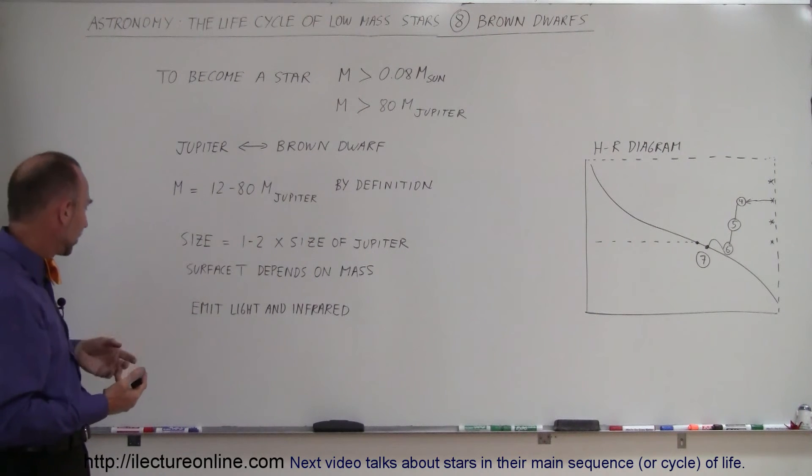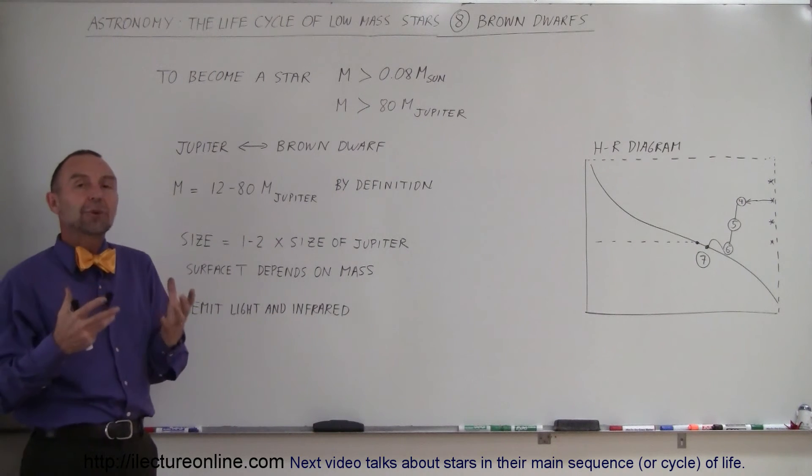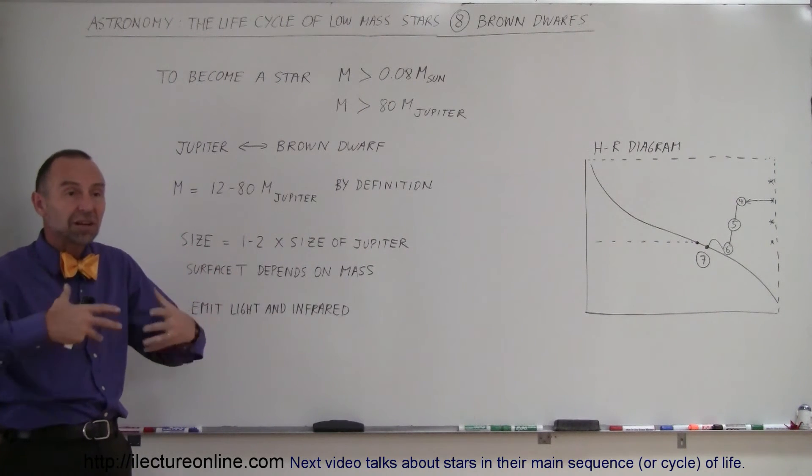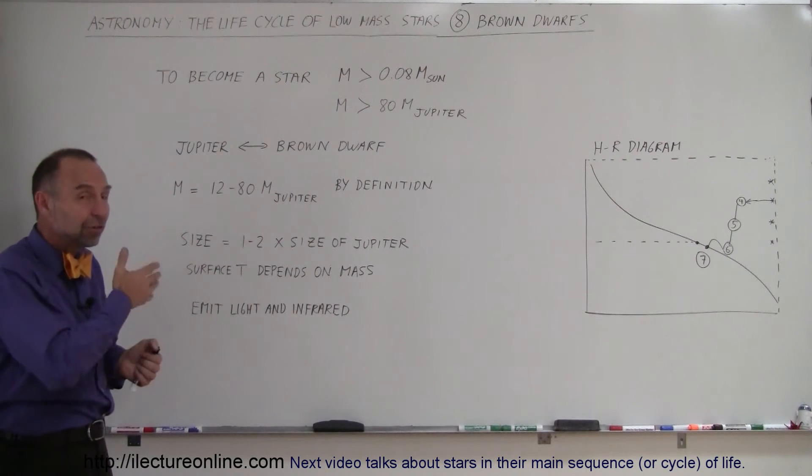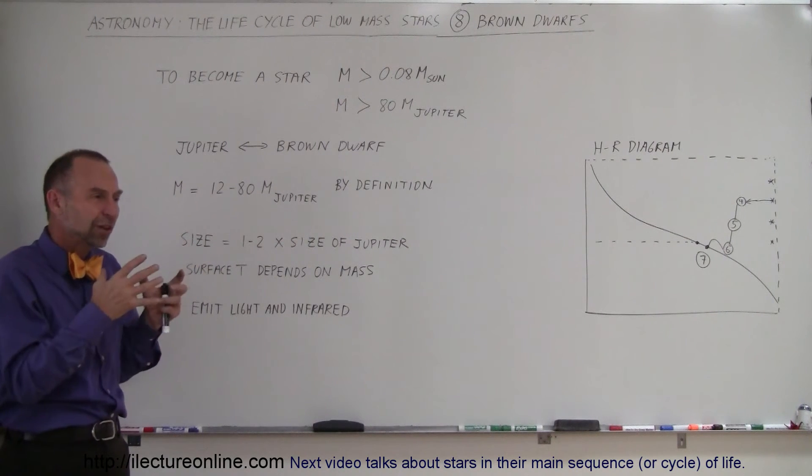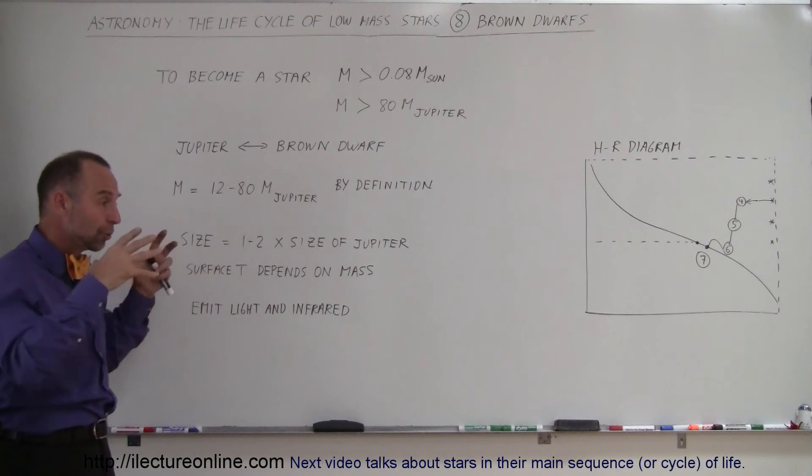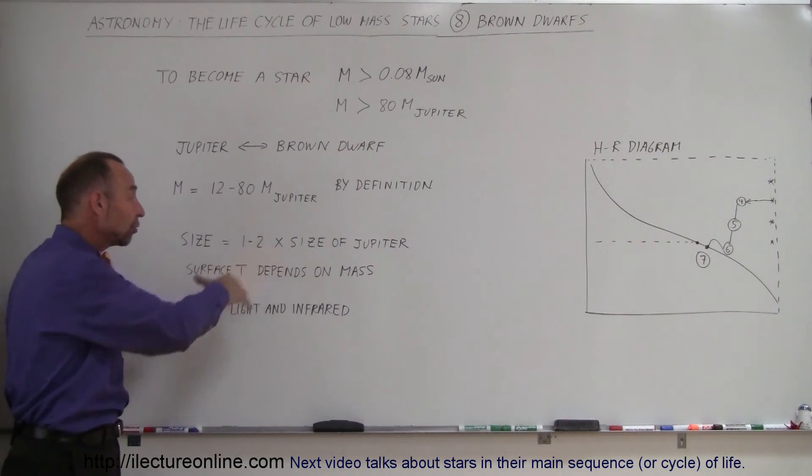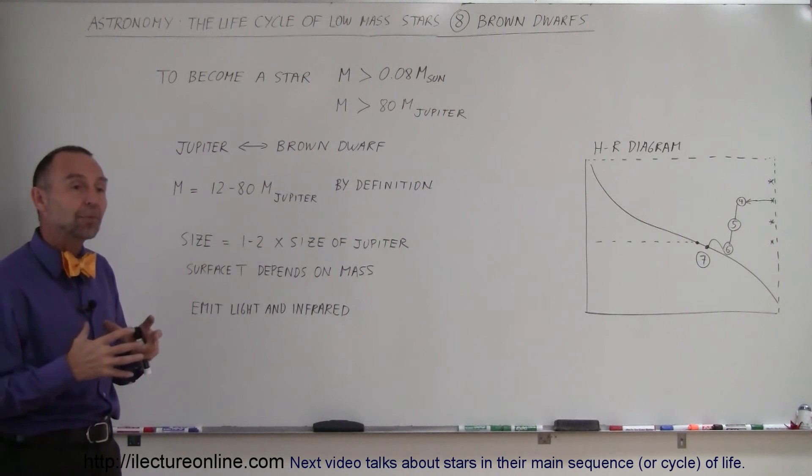It emits a little bit of light and mostly infrared radiation. It just sits there and doesn't really shine, but glows in the dark. It's very difficult to find these objects because they're not very bright and they're very small. Because of the enormous gravitational force, they get pushed down to about one to two times the size of Jupiter, and that's where their collapse stops.